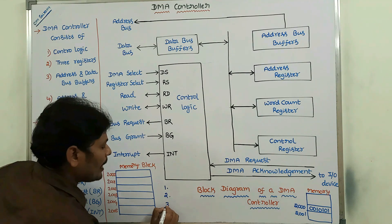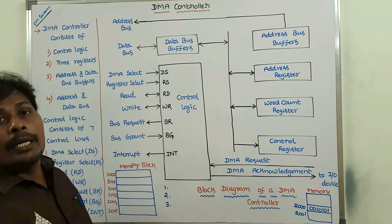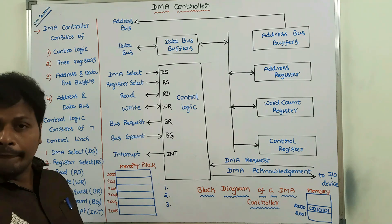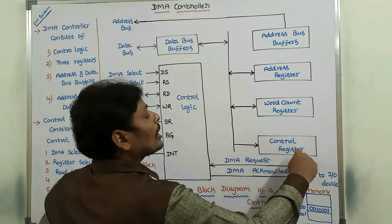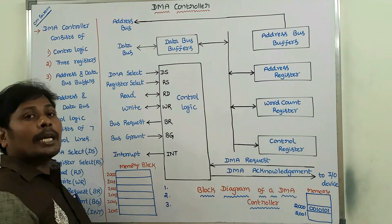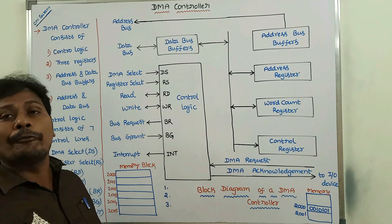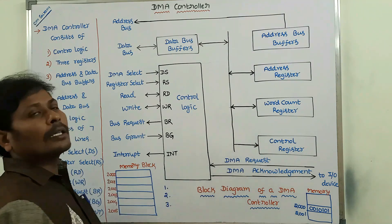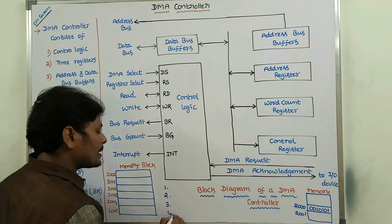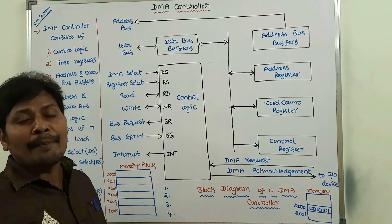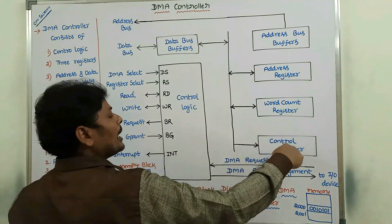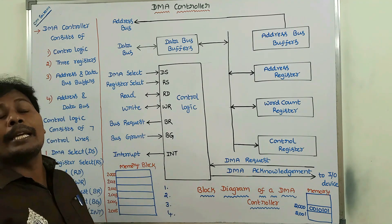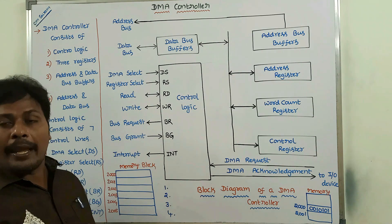The third point is a control value specifying whether a read or write operation is to be performed; this is stored in the control register. The control register determines the mode — read or write — to be performed. The fourth point is another control value that starts the DMA transfer, which is also stored in the control register.